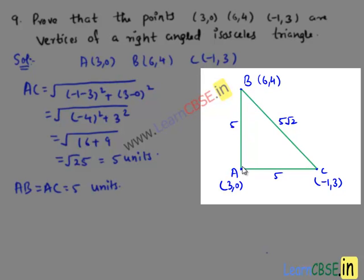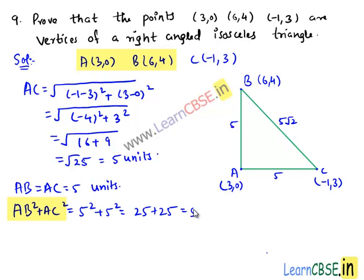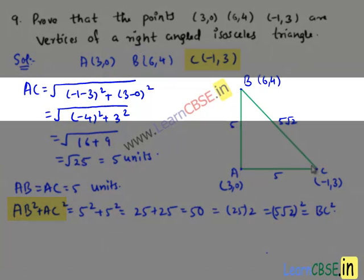Also we see that AB square plus AC square equals 5 square plus 5 square, that equals 25 plus 25, which is equal to 50, that equals 25 times 2, which is equal to (5 root 2) whole square, that equals BC square. Since hypotenuse square equals the sum of squares of the other two sides, we can say that triangle ABC is a right-angled triangle with the right angle at A.